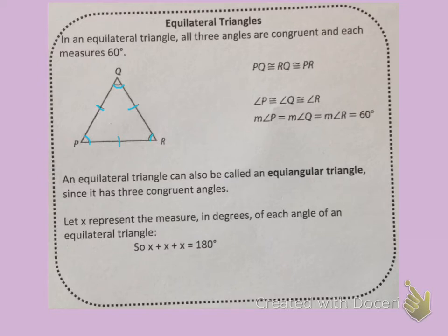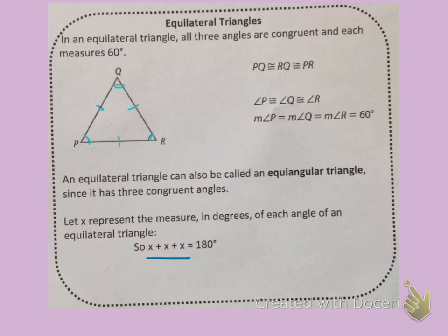An equilateral triangle can also be called an equiangular triangle, since it has three congruent angles. Let X represent the measure in degrees of each angle of an equilateral triangle. So X plus X plus X equals 180 degrees. We know that 1X plus 1X plus 1X is 3X.